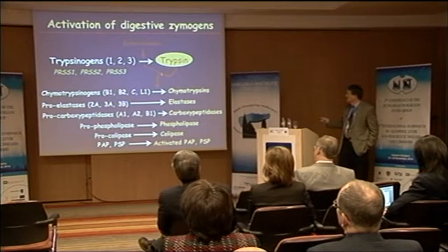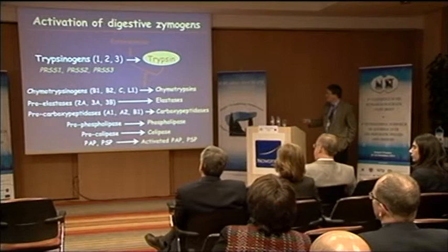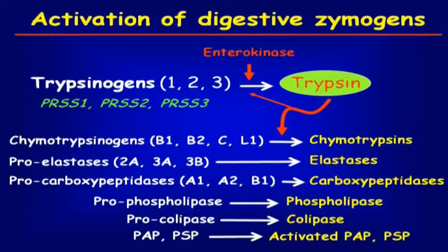There are multiple isoforms for each protease. For trypsinogens we have three different isoforms — the gene names are PRSS1, PRSS2, and PRSS3. For chymotrypsinogens there are four in humans, and we will talk a little bit about chymotrypsin C. Procarboxypeptidase CPA1 was already mentioned in Heiko's talk.